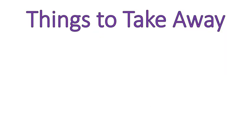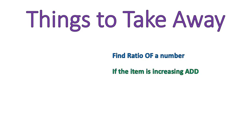A couple things to take away. One, if you're finding the ratio of a number, it means multiplying — 'of' means multiplying. If it's an increasing or growing amount, you are going to add that ratio to the amount. If it is decreasing, you will subtract. I hope that lesson was helpful for you. Have a wonderful day.